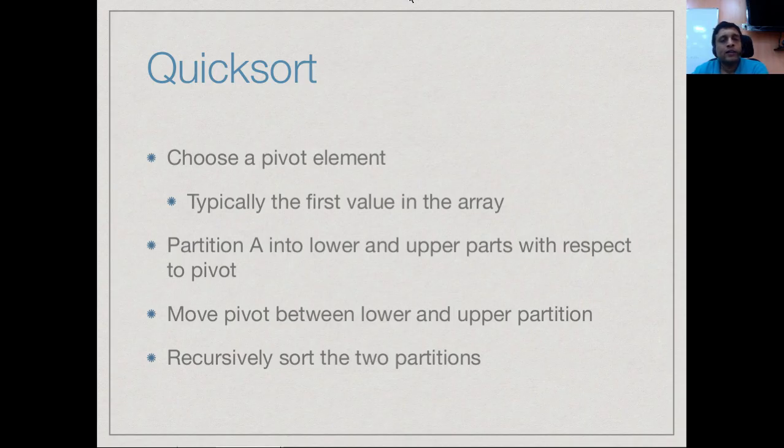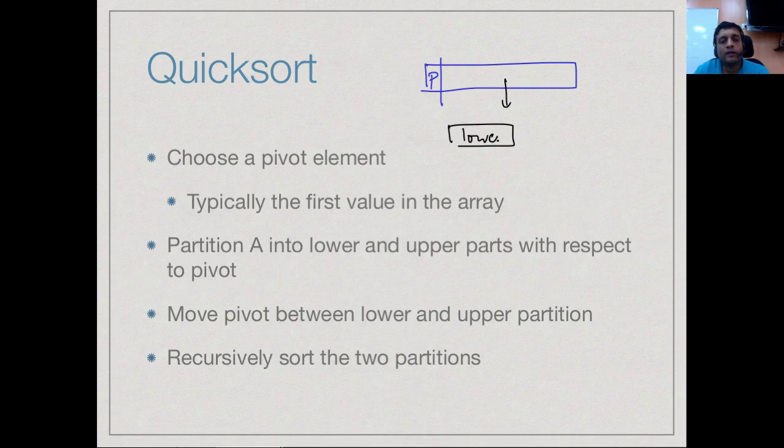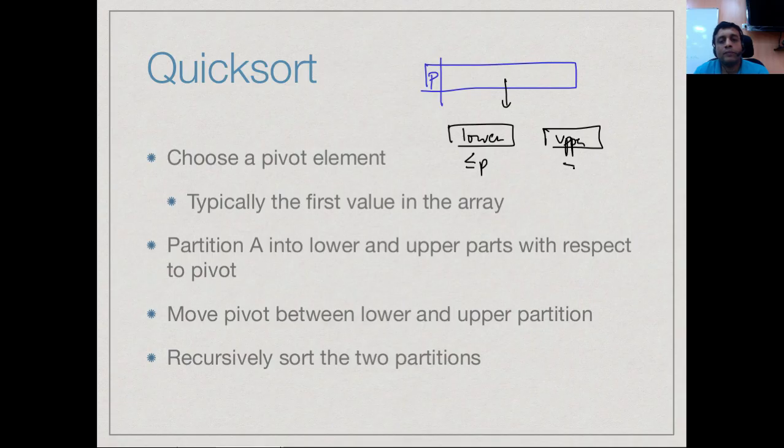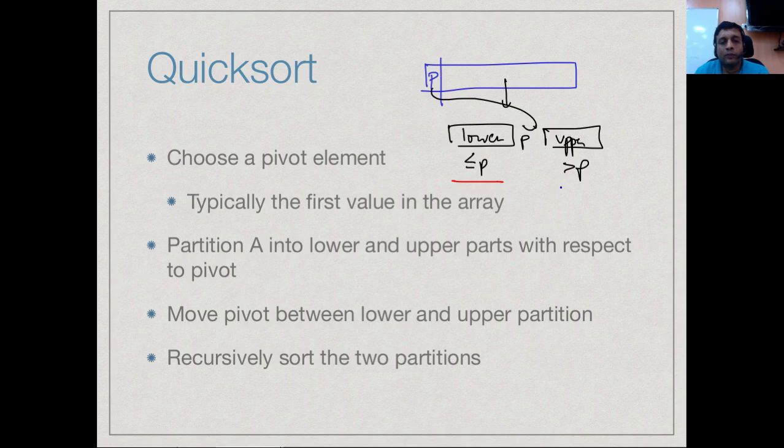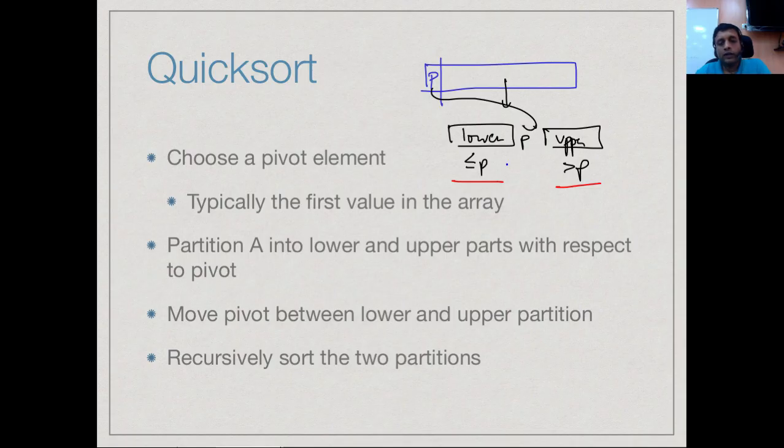Remember how quicksort works. You pick a pivot element, typically the first element of an array, and then you partition this into two parts such that you have a lower part which is less than or equal to p and an upper part which is bigger than p. You move this pivot in between and then you sort the lower part and upper part separately recursively. You do not need to do any combining step because these two things are in the correct position with respect to each other.